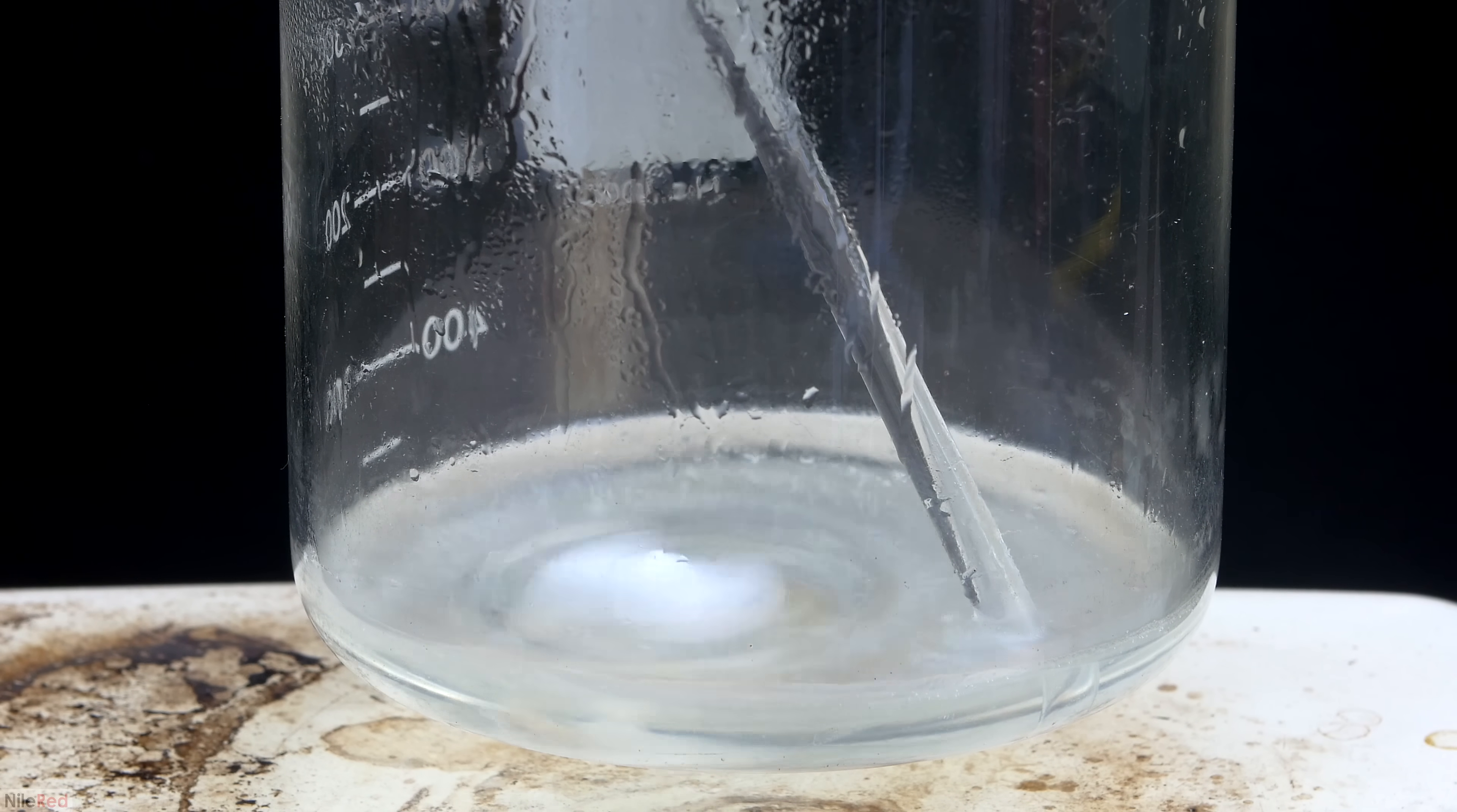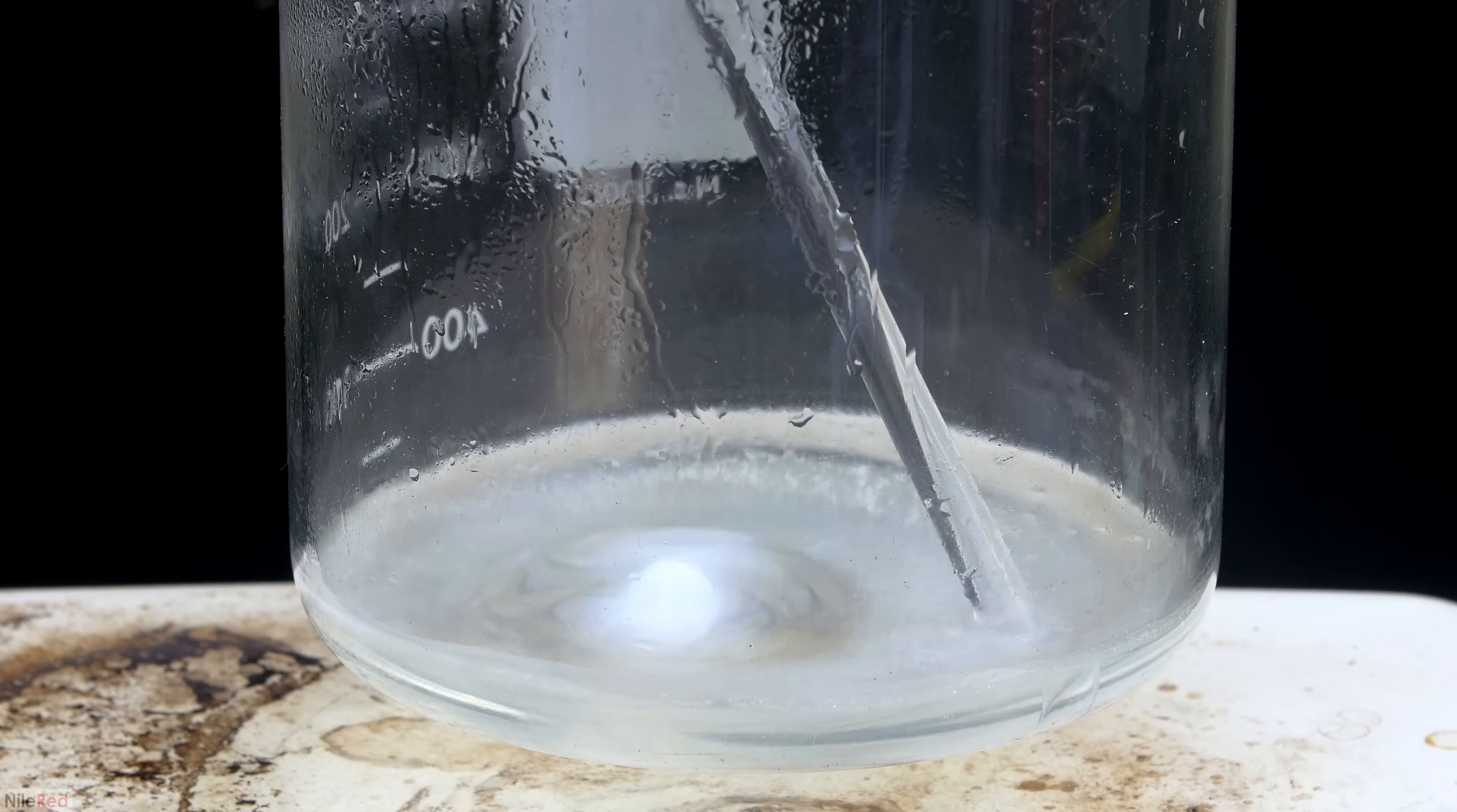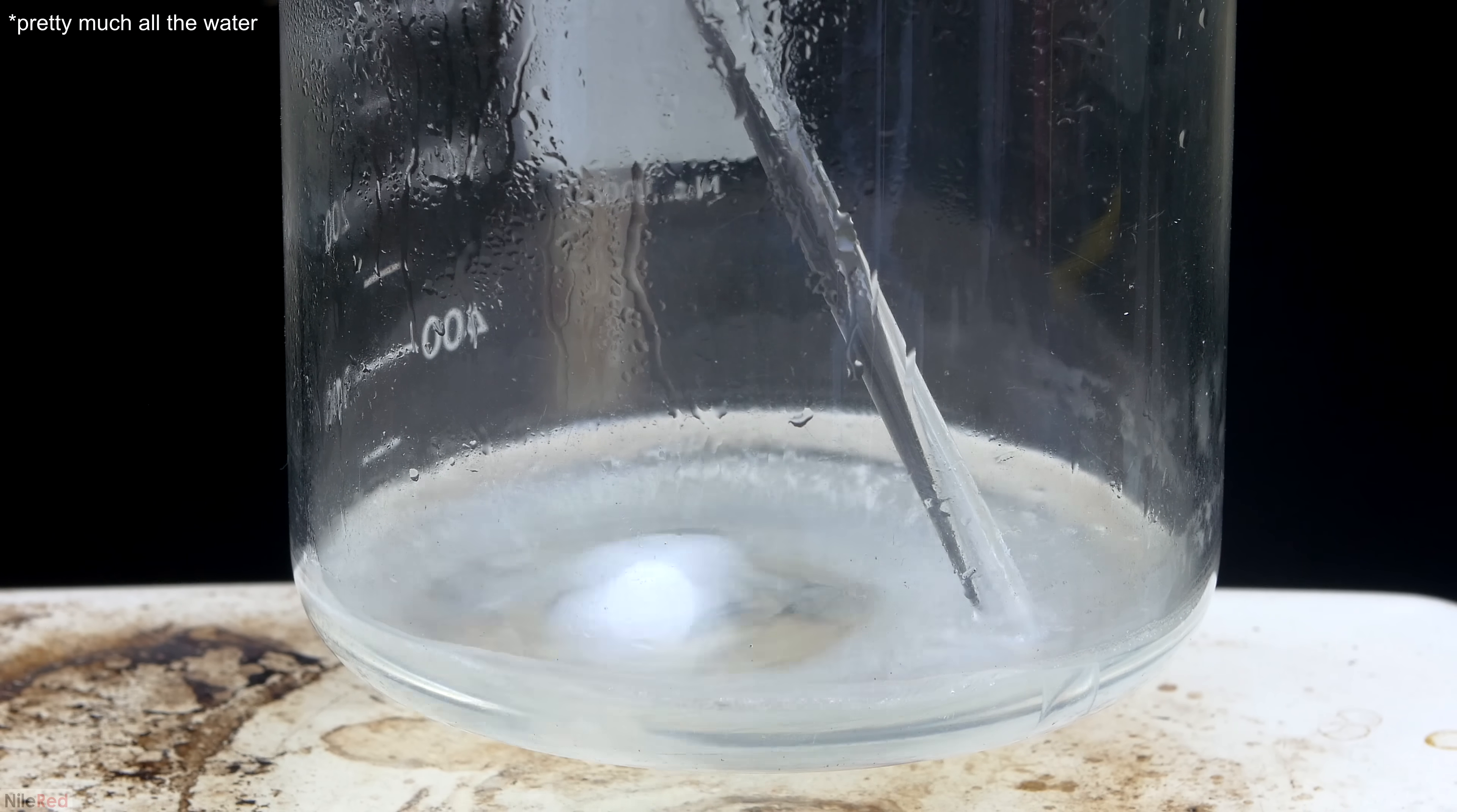Mercury(II) nitrate has an anhydrous form and a hydrated form, and the melting point of the hydrated form is 79 degrees Celsius. Even when all of the water is gone, we'll still have a liquid, because we have to slowly decompose our hydrated mercury nitrate into its anhydrous form.